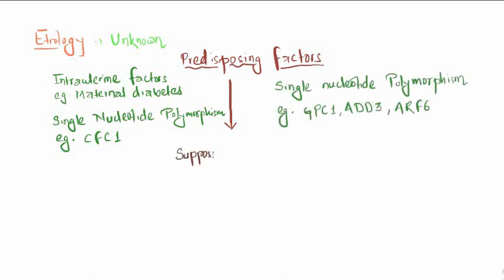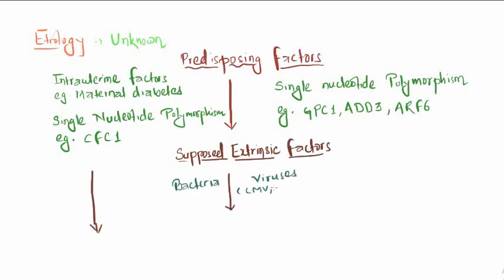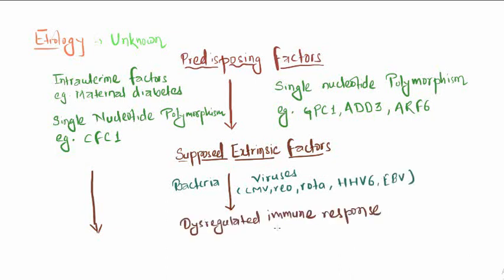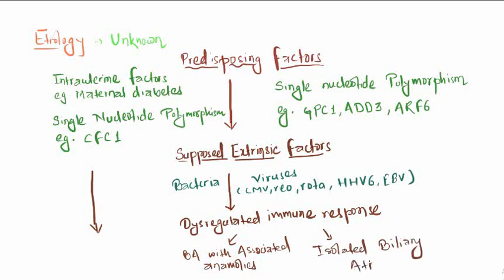Genetic factors include GPC1, ADD3, and ARF6. Extrinsic factors like bacteria and viruses - CMV, rubella, rotavirus, HSV-6, and EBV - result in dysregulated immune response, which causes biliary atresia with associated anomalies and isolated biliary atresia. Without extrinsic factors, this results in biliary atresia with splenic malformation.